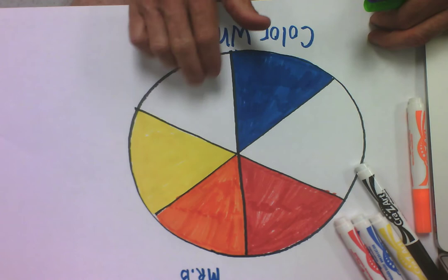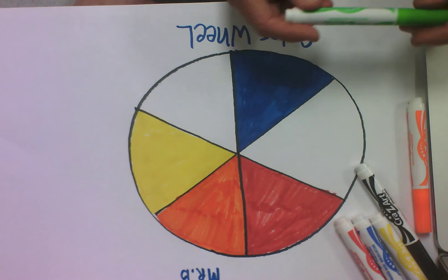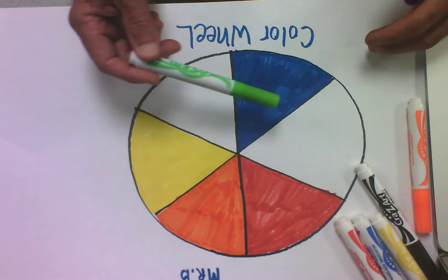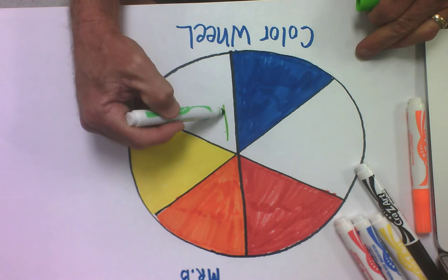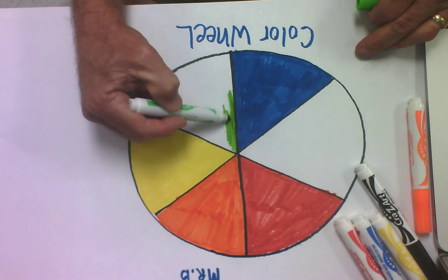Someone tell me blue and yellow, what are we going to get? Yes, it's going to be a green color. Now this is a fairly light green, so it would have more yellow in it. But for the purposes of this color wheel, this is the only color of green that I have, so it's going off fairly dark.